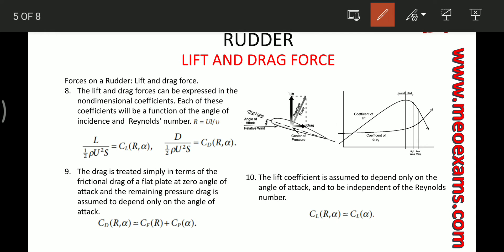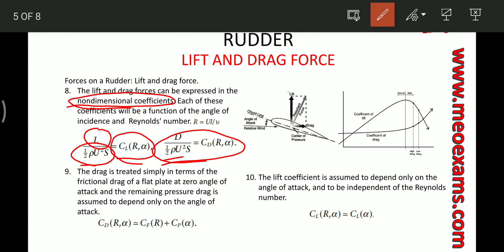These forces are represented by non-dimensional coefficients. CL is the lift coefficient, which is the ratio of lift force divided by half times density times velocity squared times projected surface area. Similarly, CD is the drag coefficient: drag divided by the same quantity. Both the lift coefficient and drag coefficient depend upon the Reynolds number and the angle of attack. The Reynolds number is dependent on velocity, chord length, and kinematic viscosity.